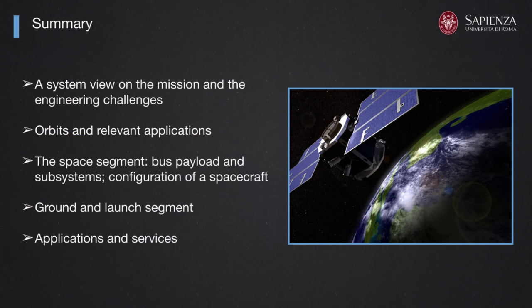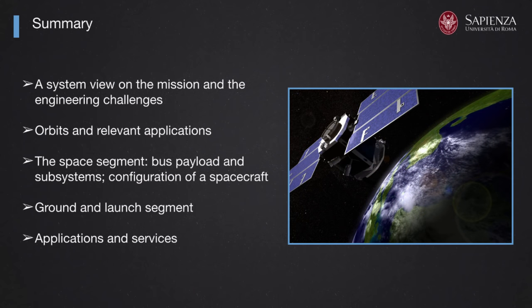My agenda for this talk is: first, considering a system view on space missions and all the engineering challenges related to the mission. Then I will shortly move to orbits and applications for each orbit around Earth, and also for trajectories leaving Earth orbit and moving to space systems in the solar system and even beyond. Then we will touch the space segment to see how a spacecraft is composed by bus, payload and subsystems, and briefly touch the ground and launch segment. Finally, we will discuss applications and services — not only space activities of today but also a little bit of space activity of tomorrow.